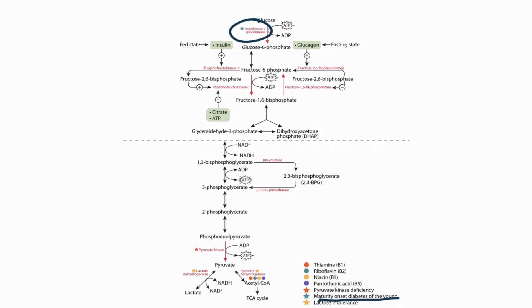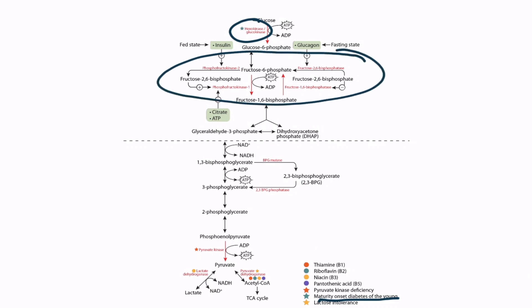Now let's discuss the rate-limiting step of glycolysis. It's important to know that this point regulates whether or not the cell is performing glycolysis or gluconeogenesis. If we go down the pathway, the cell is performing glycolysis. With the reverse pathway, the cell is performing gluconeogenesis. Gluconeogenesis primarily occurs within the liver, so when we discuss how this step is tightly regulated, we're primarily referring to glycolysis versus gluconeogenesis as it appears in the liver.